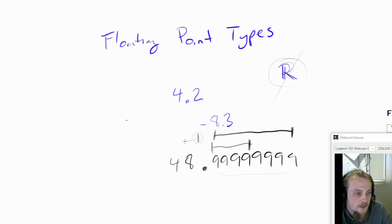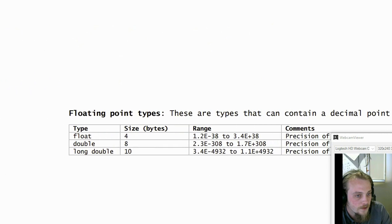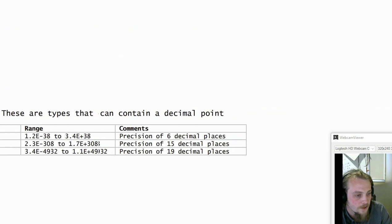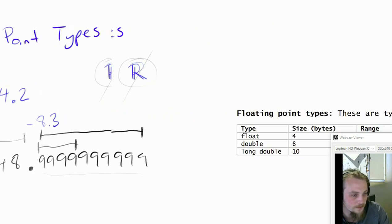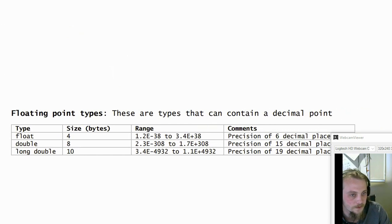We've also got the size at the front, and that's your range of values. And we'll go and have a look at this on our table. So these are your floating point types.